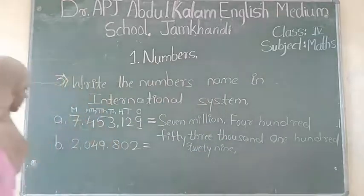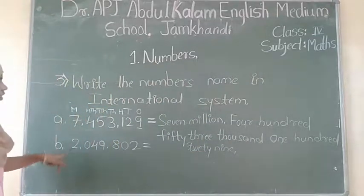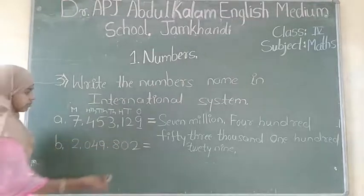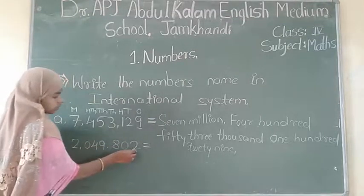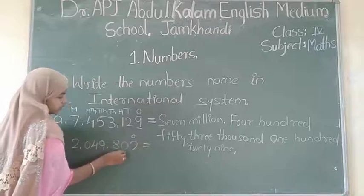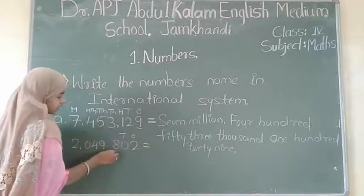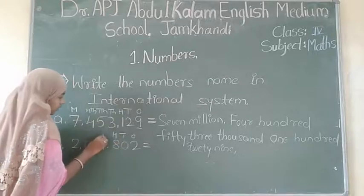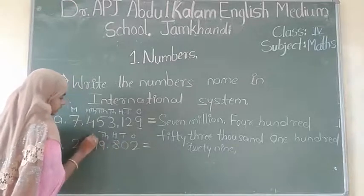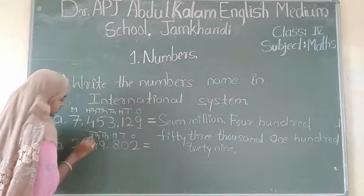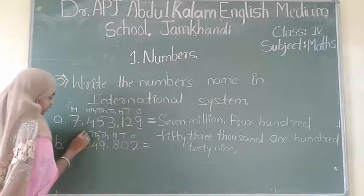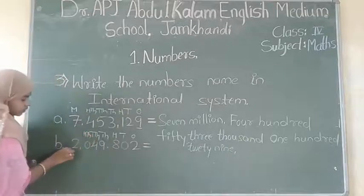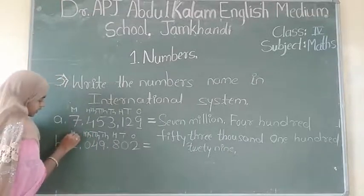The next number is 2,049,802. So right here, let's write the place values. 2 is in the ones place, 0 is in the tens place, 8 is in the hundreds place. Next, 9 is in the thousands place, 4 is in the ten-thousands place, and 0 is in the hundred-thousands place. Last, 2 is in the millions place.